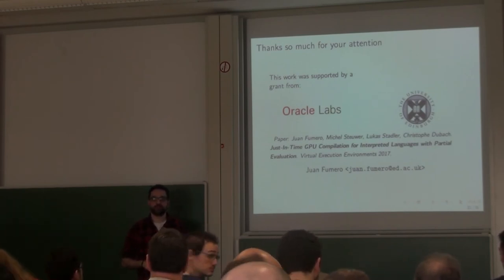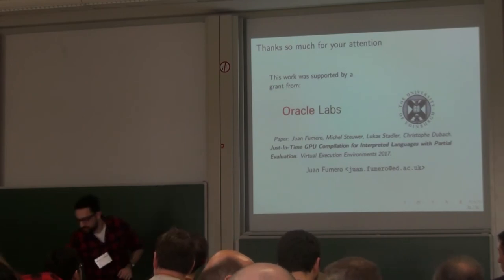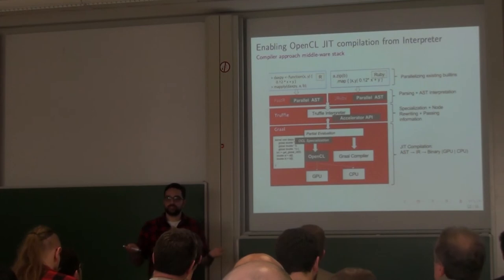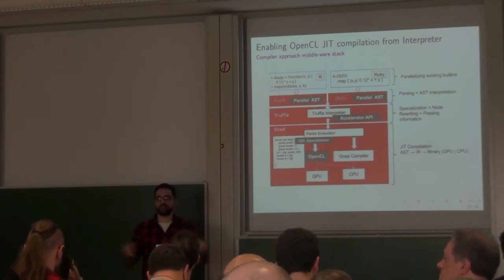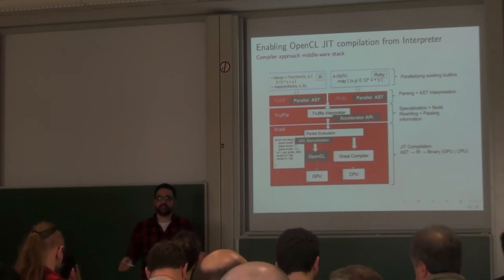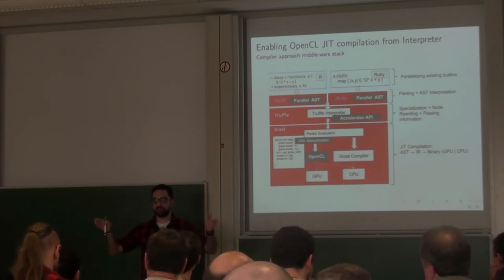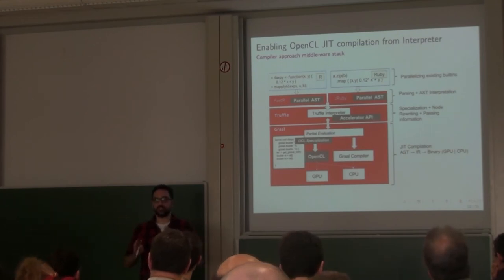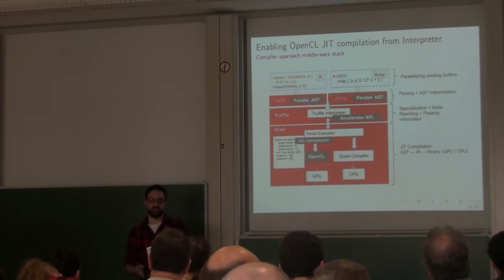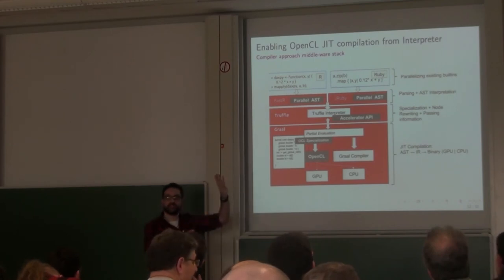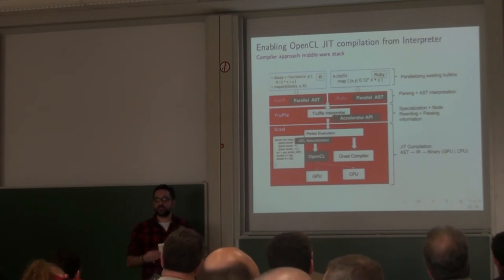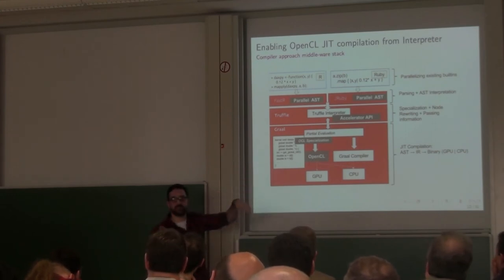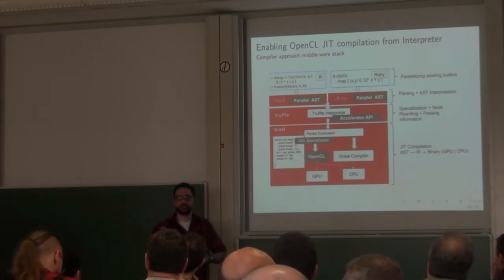Question: How do you decide which code to offload to the GPU? We don't do auto-parallelization. What we do is take advantage of existing primitives in the language that correspond to parallel semantics. In R, there is the apply function — apply is parallel, meaning you pass a function over an input vector and execute it for every element, so there are no data dependencies. That corresponds to the map parallel skeleton on the GPU, which is the best case. Similarly, Ruby and Python have the map primitive.